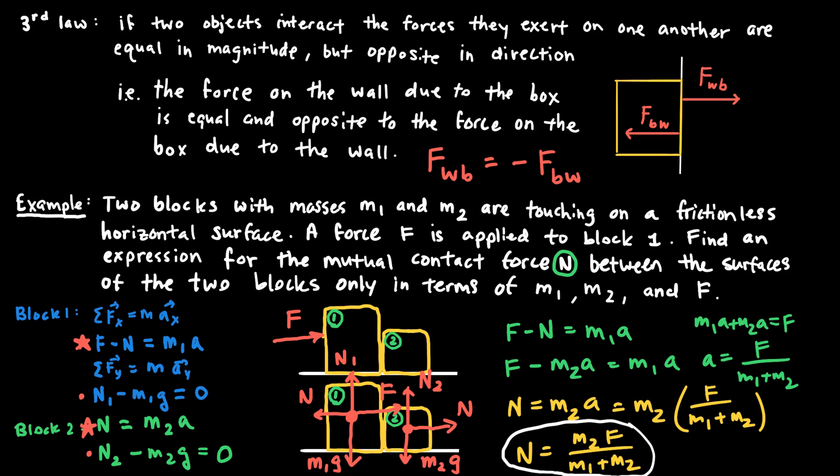One thing to note about this expression is that m2 appears in the numerator as a multiplier but also in the denominator as part of a sum. This means that as m2 increases, the contact force N between the two objects also increases, because in the numerator m2 is multiplied by F, while in the denominator it is only added to m1.